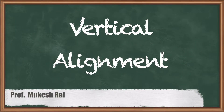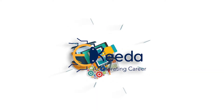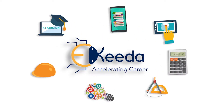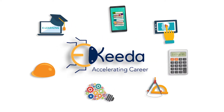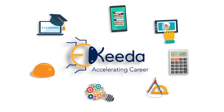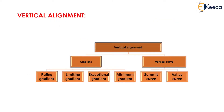Hello students, today we are going to study vertical alignment. Vertical alignment is subdivided into two parts: the first one is gradient and the next one is vertical curve.